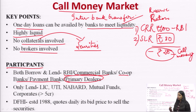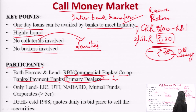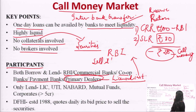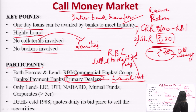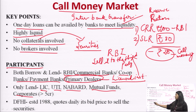Primary dealers are certified licensed institutions that have the authority to borrow money from RBI and sell it to third parties. People who can only lend — not borrow — include LIC, UTI, NABARD, mutual funds, and any corporate house with a turnover of more than 5 crores. These entities can lend money to banks.